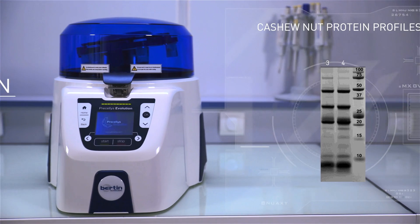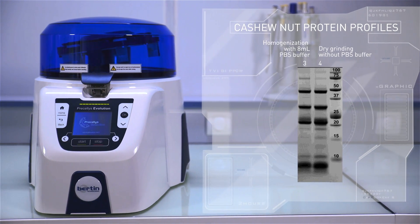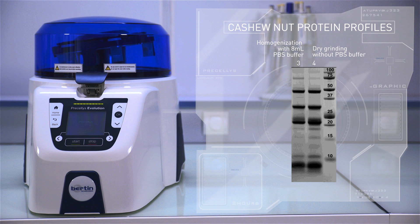The protein bands in lane 3 are obtained after homogenization in PBS, while lane 4 represents protein bands after grinding without PBS buffer. Pressilis Evolution is suitable and convenient for protein extraction.